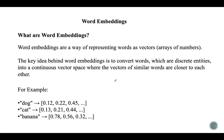Unlike one-hot encoding, embeddings enable a better understanding by capturing semantic relationships. For example, the word 'dog' will be represented as a vector, and 'cat' will have its own vector representation, while 'banana' will be represented differently. Word embeddings are a way of representing words as vectors — arrays of numbers.